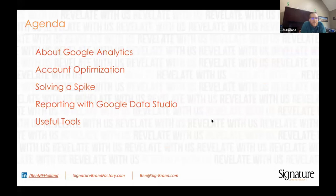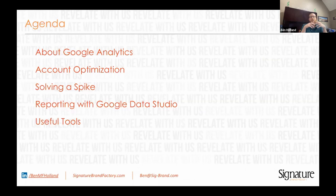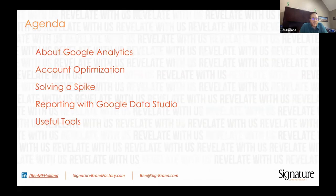So today with Google Analytics: first, I'm going to talk a little bit about analytics. I'm going to show you how to optimize your account in the backend settings section. I'm going to show you a pretty common problem — you come in and see a spike in your traffic, a ton of traffic — and I'm going to talk about solving that spike and figuring out where it came from. I'm going to briefly talk about using Google Data Studio to report, and then go through a lightning round highlighting some useful tools.